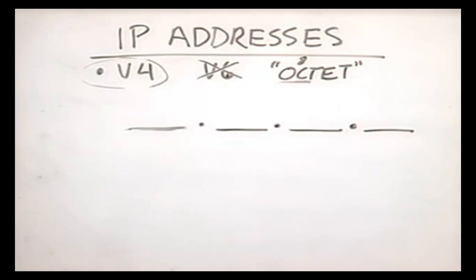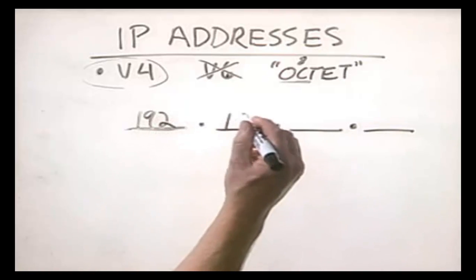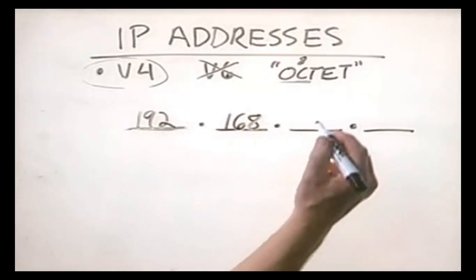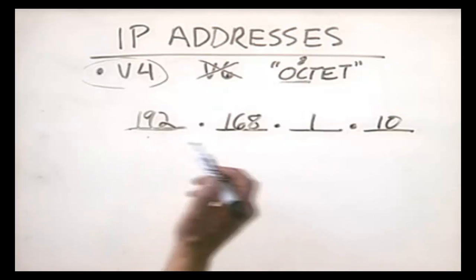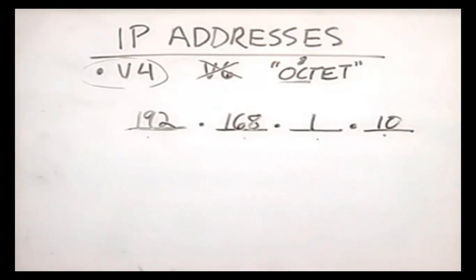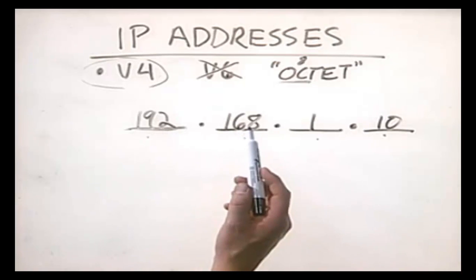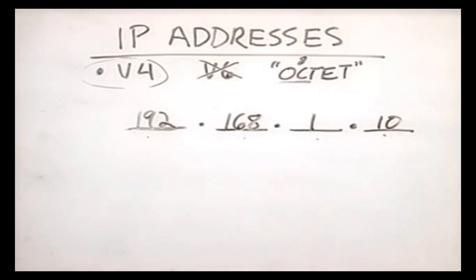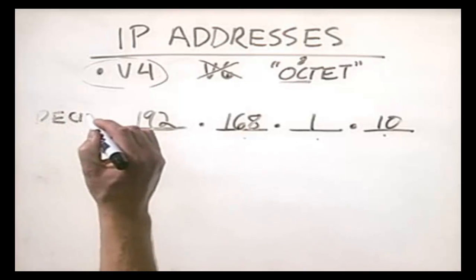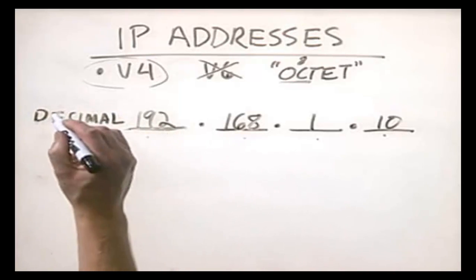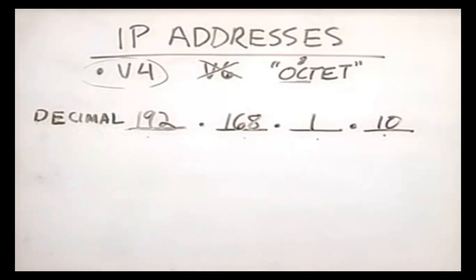Groups of eight what? Let's take a look at an average IP address: 192.168.1.10. This is a very common IP address. We say that each of these are octets. We call it an octet because these numbers, which we reference here in decimal notation, are actually treated by the system and by the network as binary numbers.